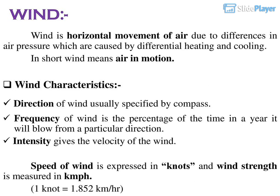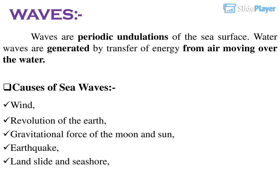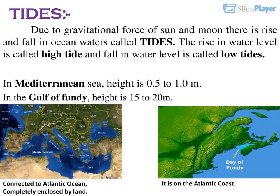1 knot equals 1.852 km per hour. Waves are periodic undulations of the sea surface. Water waves are generated by transfer of energy from air moving over the water. Causes of sea waves include: wind, revolution of the Earth, gravitational force of the moon and sun, earthquake, and landslide in seashore.